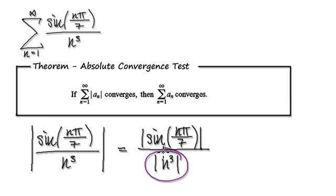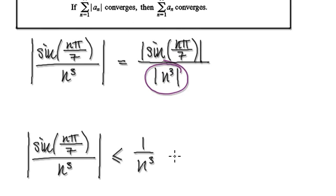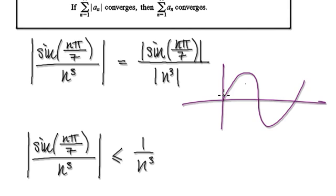Well, this is always going to be positive. So it's going to always be n to the power of 3. Now, sine, so remember, when you look at sine, sine is going to oscillate between 1, negative 1, 1, negative 1, and so on.